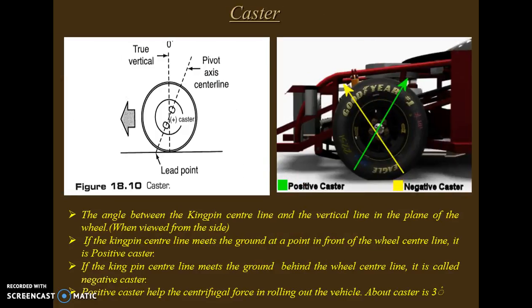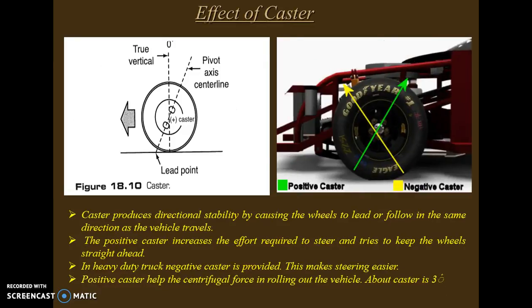Caster is the angle between the kingpin center line inclination and the vertical line in the plane of the wheel when viewed from the side. Positive caster is shown by a green arrow and negative caster by a yellow mark in the figure. Caster produces directional stability by causing the front wheels to lead or follow in the same direction as the vehicle travels.